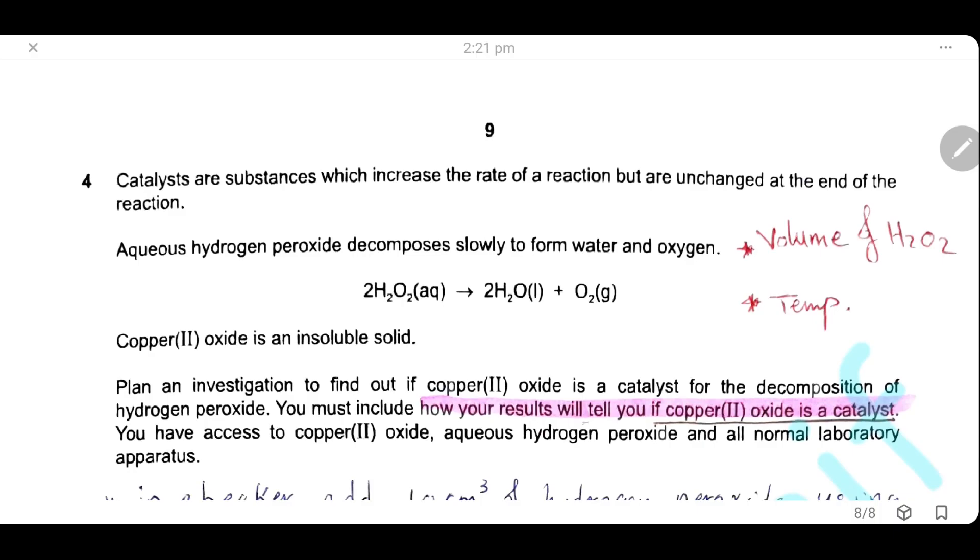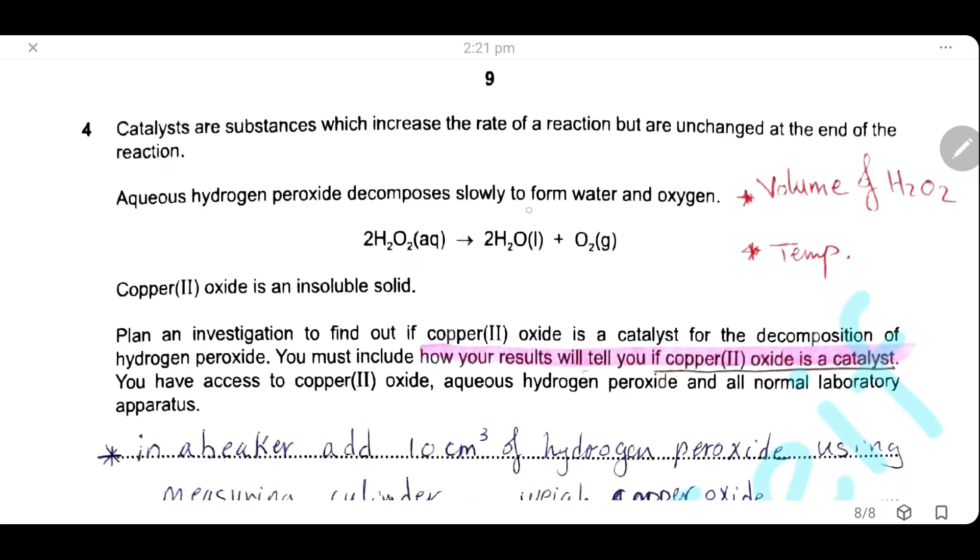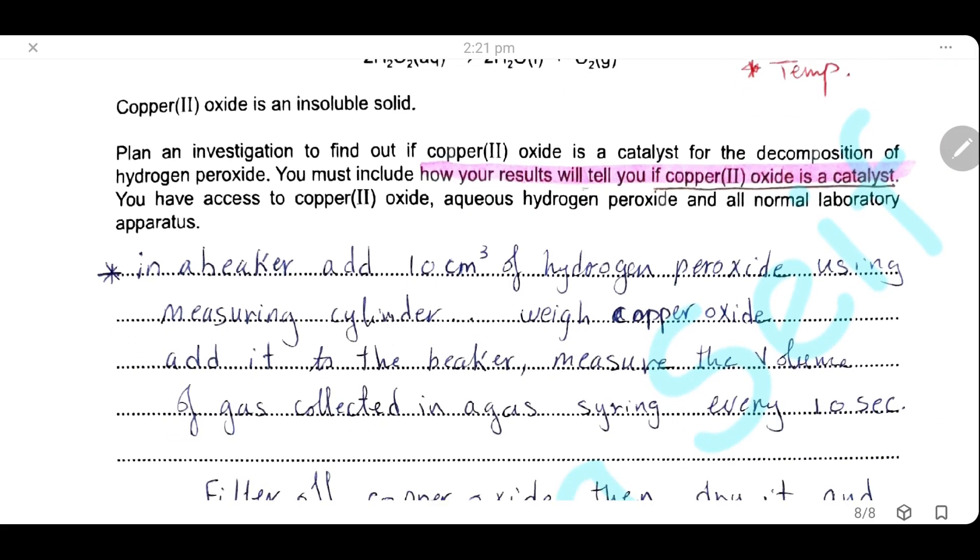Question 4. Catalysts are substances which increase the rate of reaction but are unchanged at the end of reaction. Aqueous hydrogen peroxide decomposes slowly to form water and oxygen. Copper oxide is an insoluble solid. Plan an investigation to find out if copper oxide is a catalyst for the decomposition of hydrogen peroxide. You must include how your results will tell you if copper oxide is a catalyst. You have access to copper oxide, aqueous hydrogen peroxide, and normal laboratory apparatus. First, in a beaker, add 10 cm³ of hydrogen peroxide using a measuring cylinder.